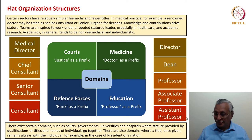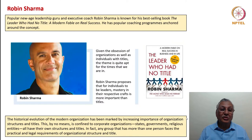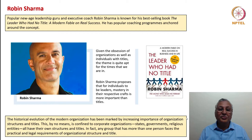In certain cases, like president of the nation, the title of the president stays on even when the president is out of tenure. Robin Sharma, the new age leadership guru and executive coach, came up with a bestselling book called 'The Leader Who Had No Title.' Given the obsession of organizations as well as individuals with titles, I thought that this theme is quite apt for the times that we are in. I have therefore talked about the principles that come out of his book in the first part of this lecture.